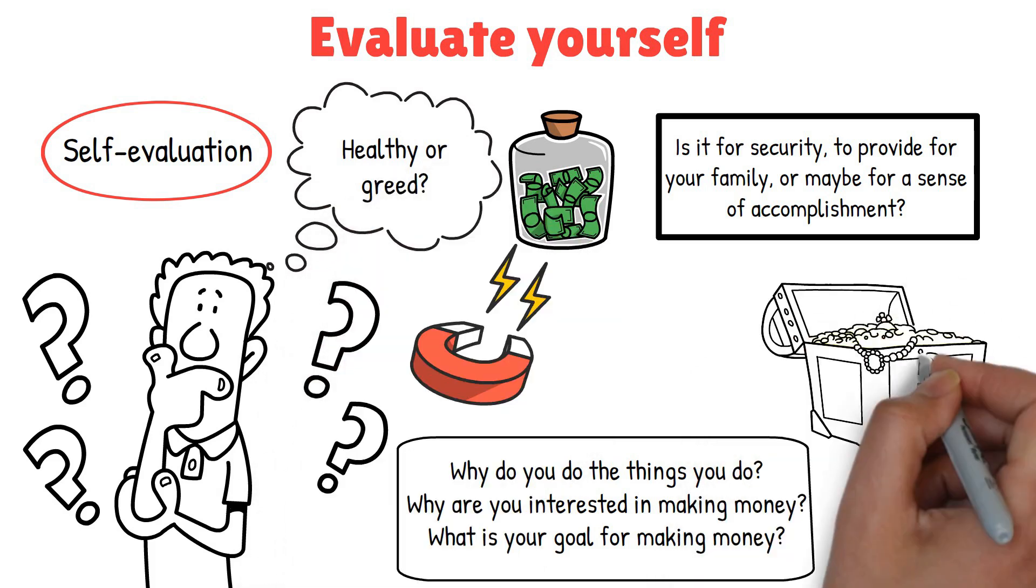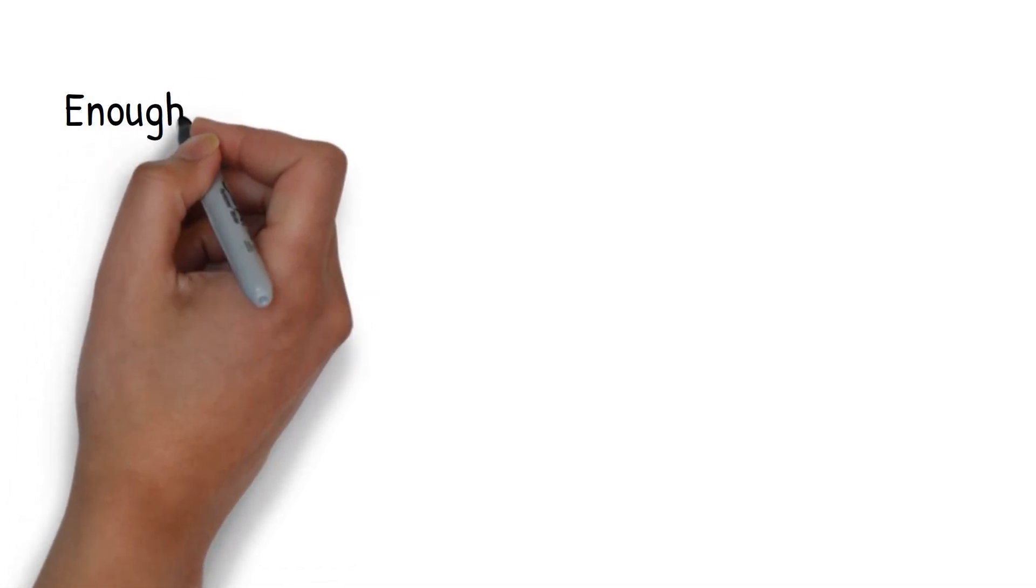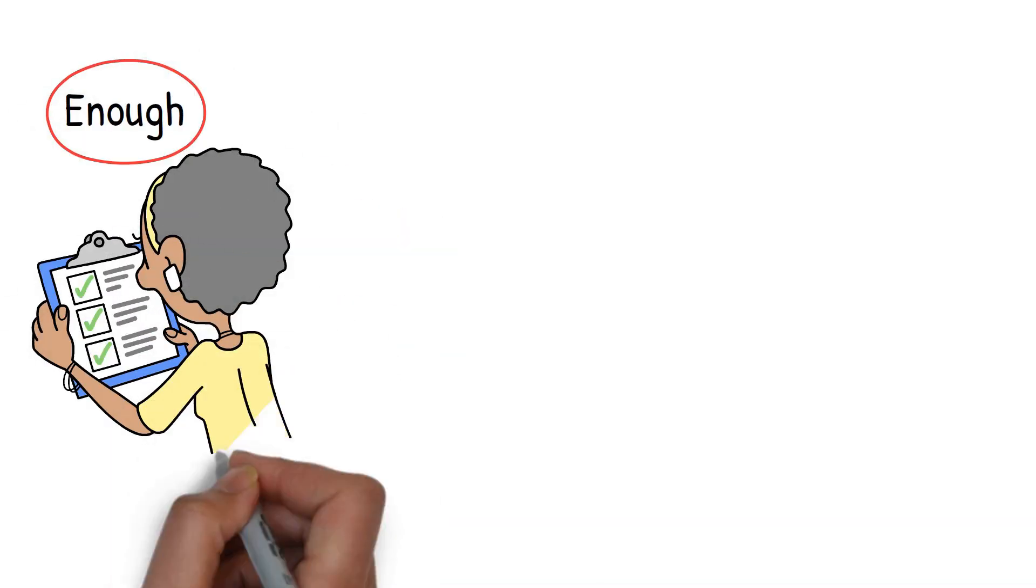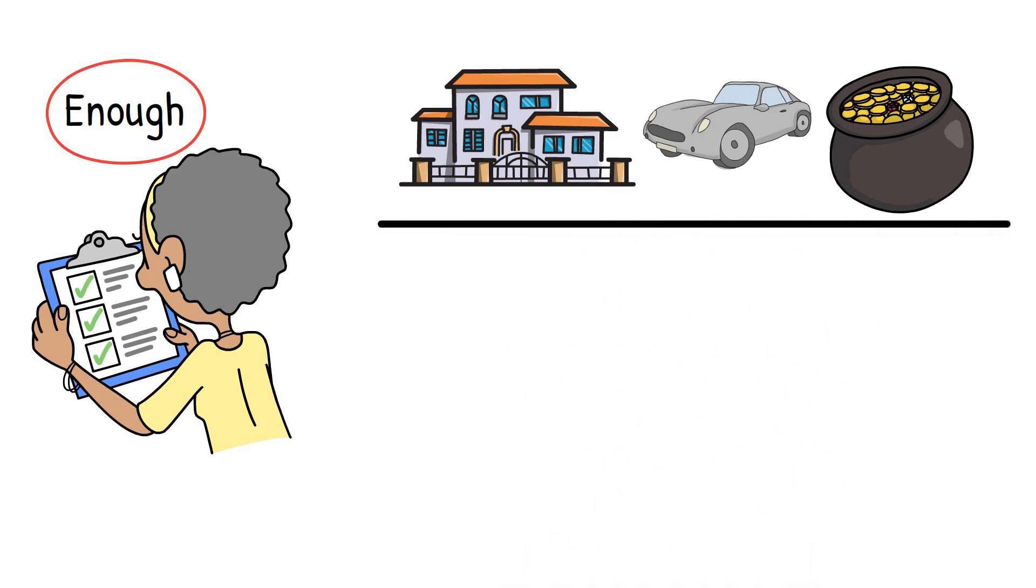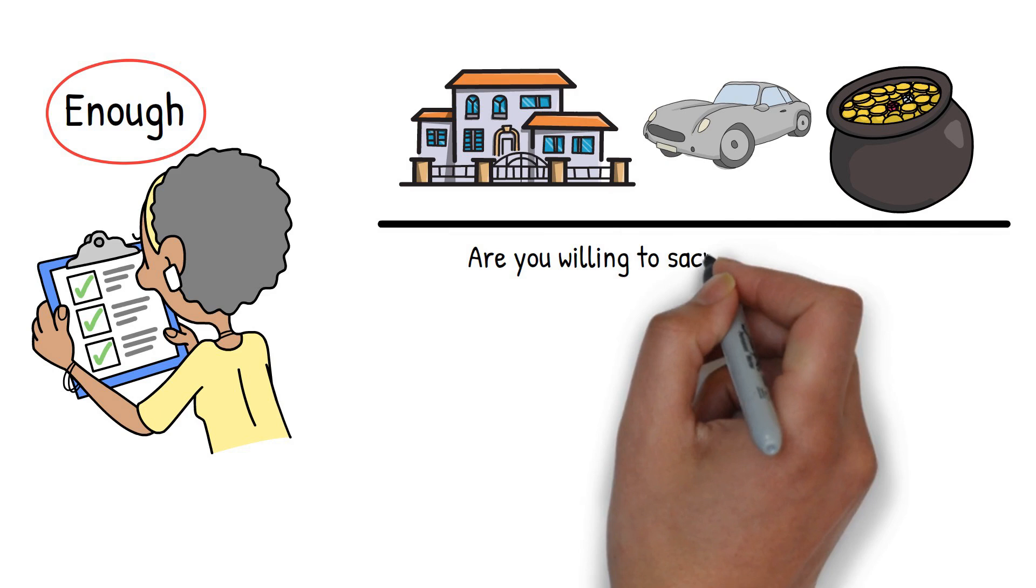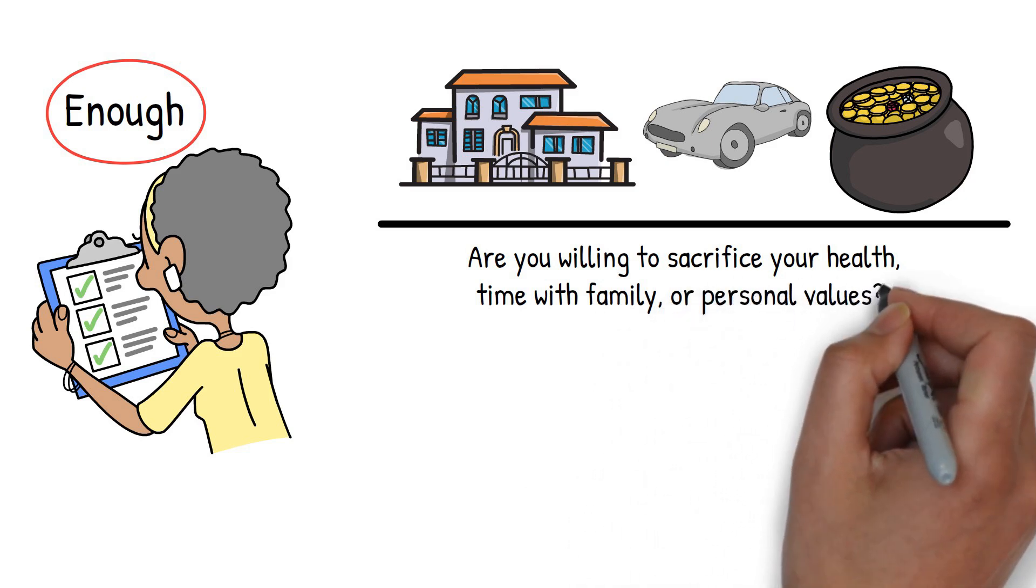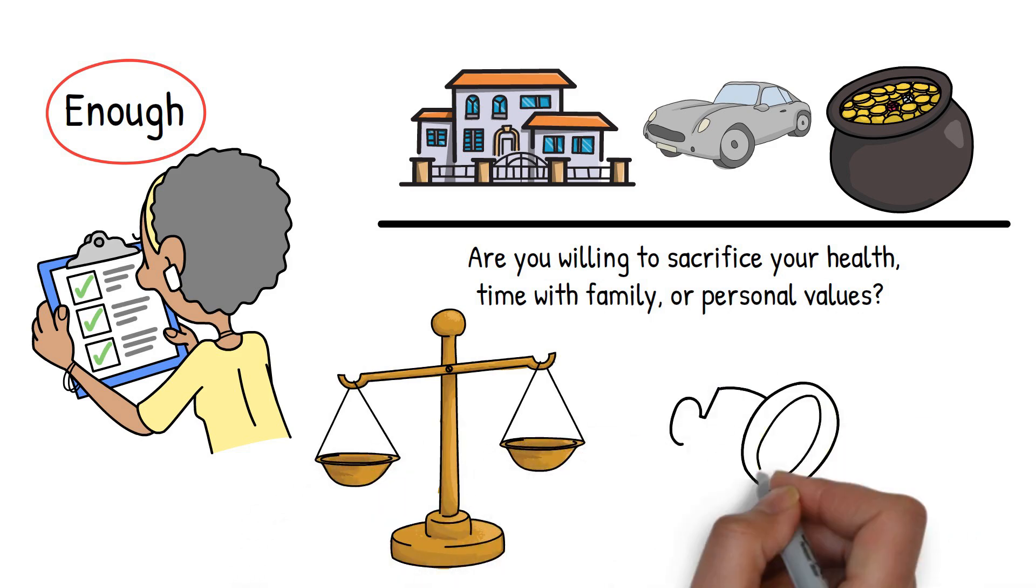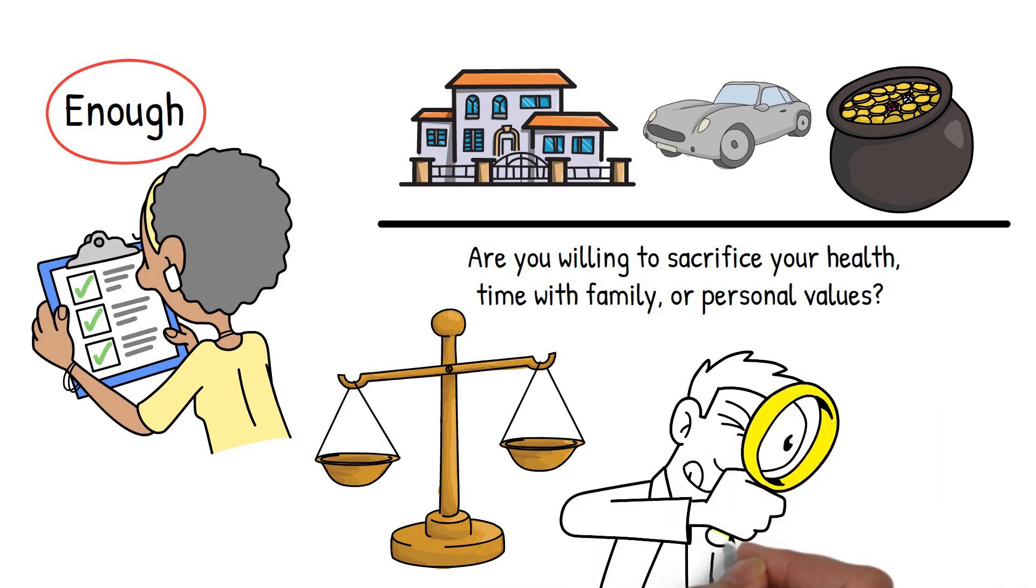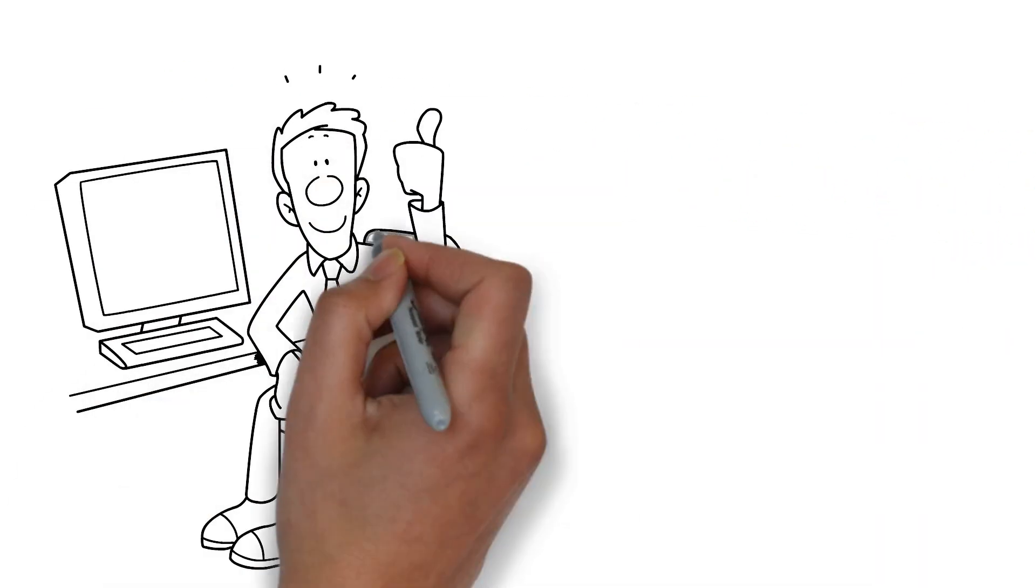Next, ask yourself how much you think will be enough for you. This is a tricky one, because it's easy to fall into the trap of always wanting more. But having a clear idea of what enough looks like can help you set realistic goals and avoid the endless pursuit of more. Maybe enough for you is having a comfortable home, a reliable car, or enough savings to feel secure. Whatever it is, defining it helps you focus on what truly matters. Now, think about how far you're willing to go to make money. Are there limits you can't cross in your pursuit of wealth? For instance, are you willing to sacrifice your health, time with family, or personal values? Recognizing these boundaries is important, because it helps you stay true to yourself and maintain a healthy balance. Another important question is what you would do anything for. Identifying that one thing that you value above all else can give you clarity about your priorities. Maybe it's your family, your health, or your happiness. Whatever it is, knowing this can help you make better decisions about how you spend your time and energy.